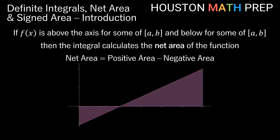If our function is above the axis for some of our interval and below for some of the interval, then the integral is going to calculate the net area of the function. It will find the positive area and subtract anything that is negative area below the axis. In this picture, with this diagonal line as my function, I actually have two regions — one triangular region below the axis giving negative area, and one above the axis giving positive area.